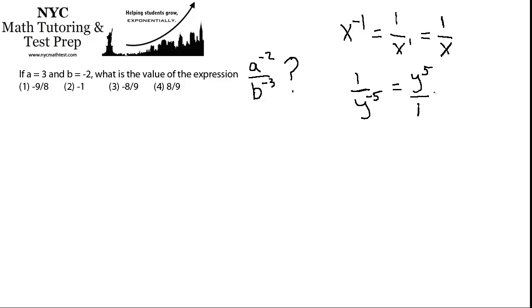And that would be over 1. So we don't have to write over 1, so this would just be y to the 5th.